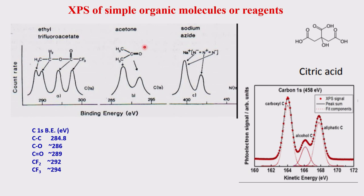Another example: the acetone molecule. Acetone has one carbonyl carbon (C=O) and two equivalent methyl carbons (CH3). So there are two types of carbons. The carbonyl carbon is attached to the electronegative oxygen, so it comes at higher binding energy. The two CH3 carbons come at lower binding energy. Taking the area ratio of the two peaks, you get 1:2 — confirming one carbonyl carbon and two methyl carbons. The greater the electronegative atom directly attached, the greater the binding energy.